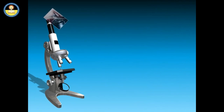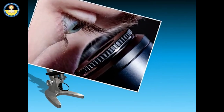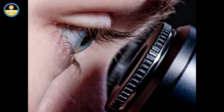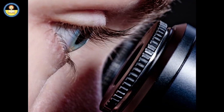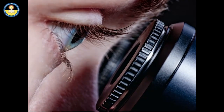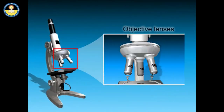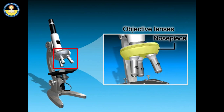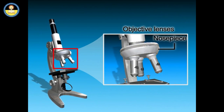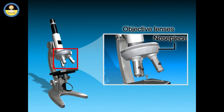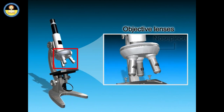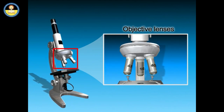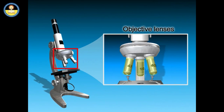You look through the eyepiece lens for viewing the object under the objective lens. Objective lenses are present in a rotating mount called the nose piece, which holds many objective lenses. Usually, they are of 4x, 10x, and 40x magnifying powers.